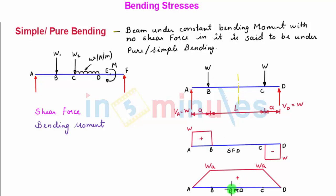In the bending moment diagram, we see that segment BC is subjected to a constant bending moment of magnitude W times a. So we can say that segment BC is subjected to zero shear force and constant bending moment. Therefore, segment BC is under pure or simple bending.